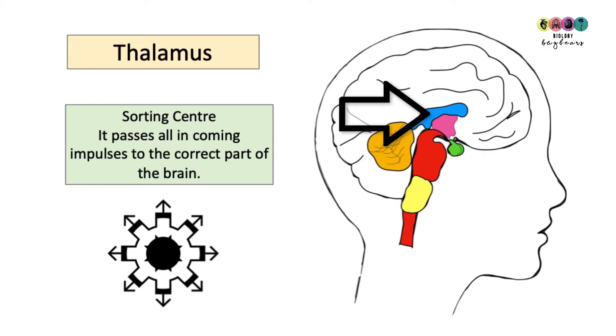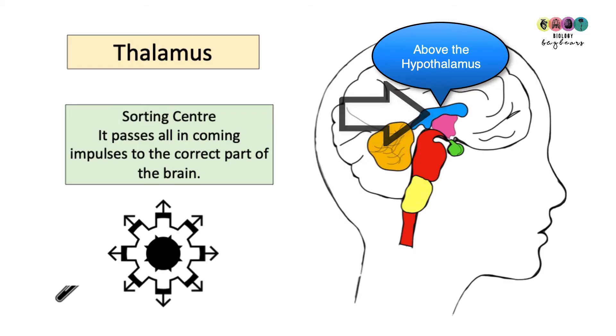The thalamus is the sorting center of the brain. All the incoming impulses arrive here and it passes them on to the correct part of the brain. It's just above the hypothalamus and it's a weird one to find on a diagram, it's outlined in blue here.